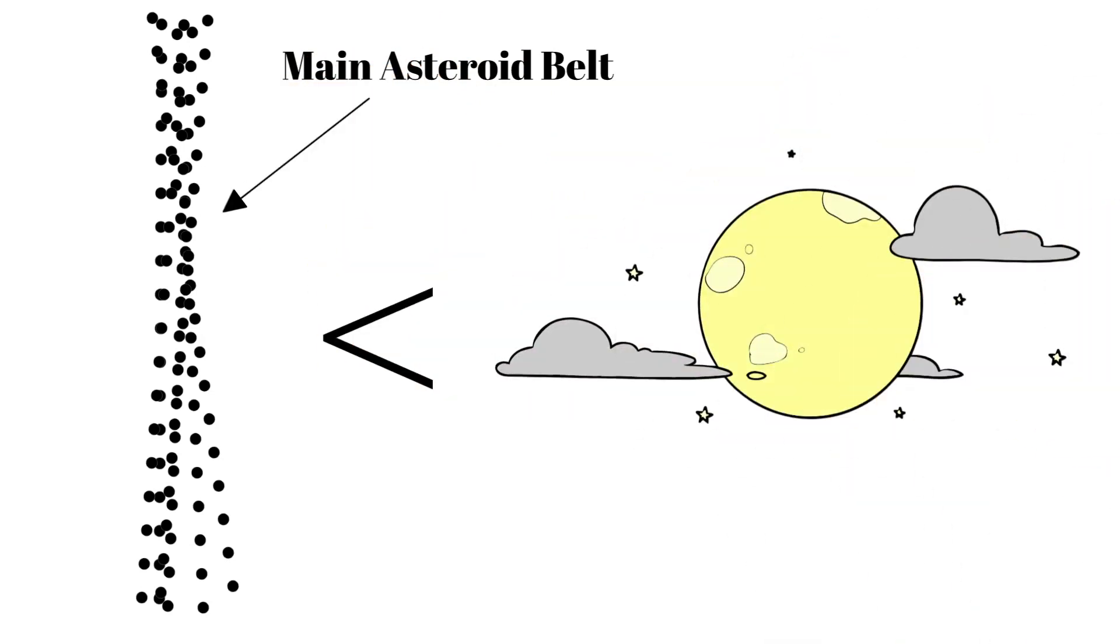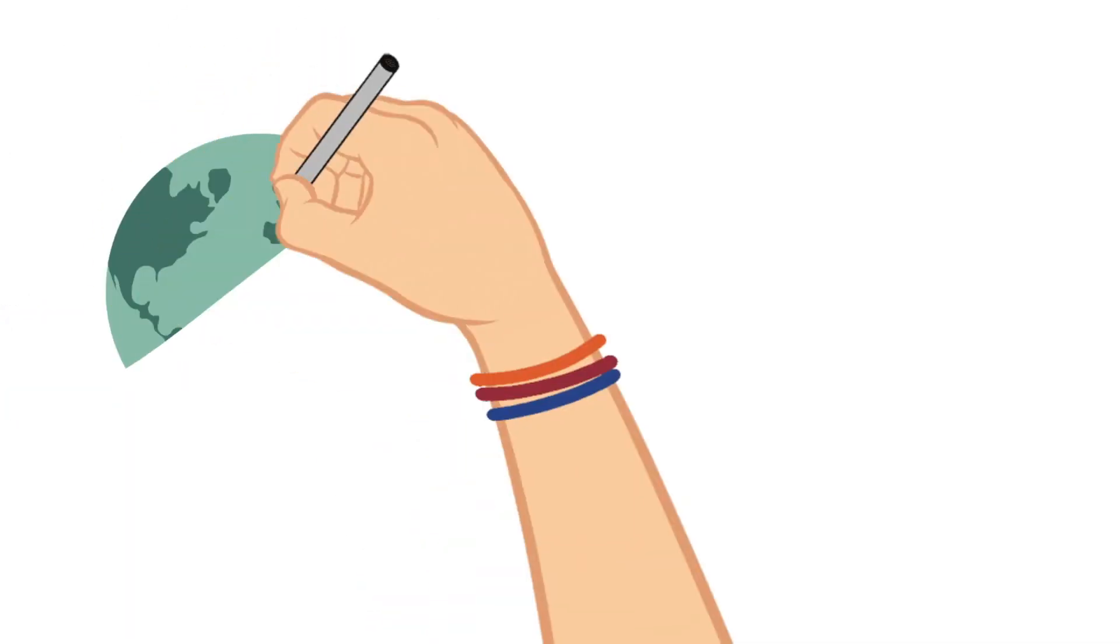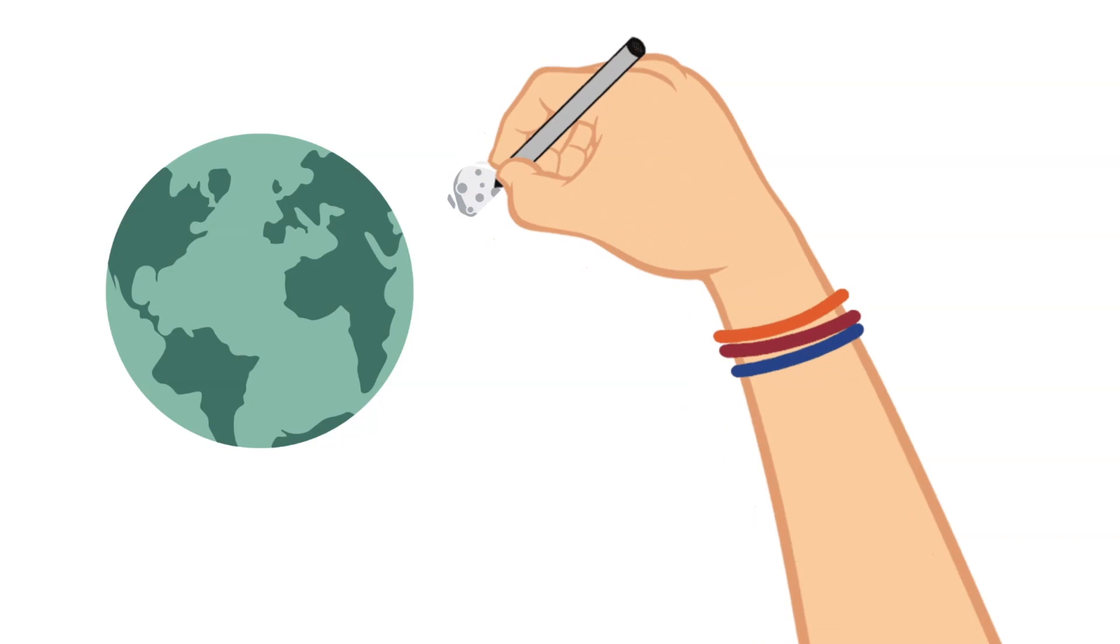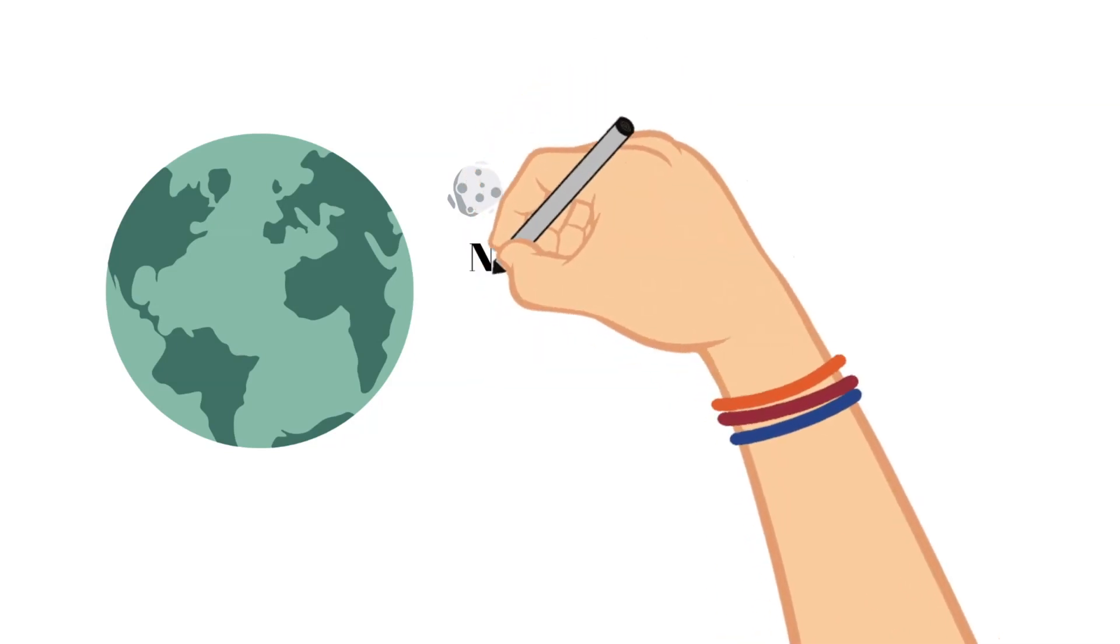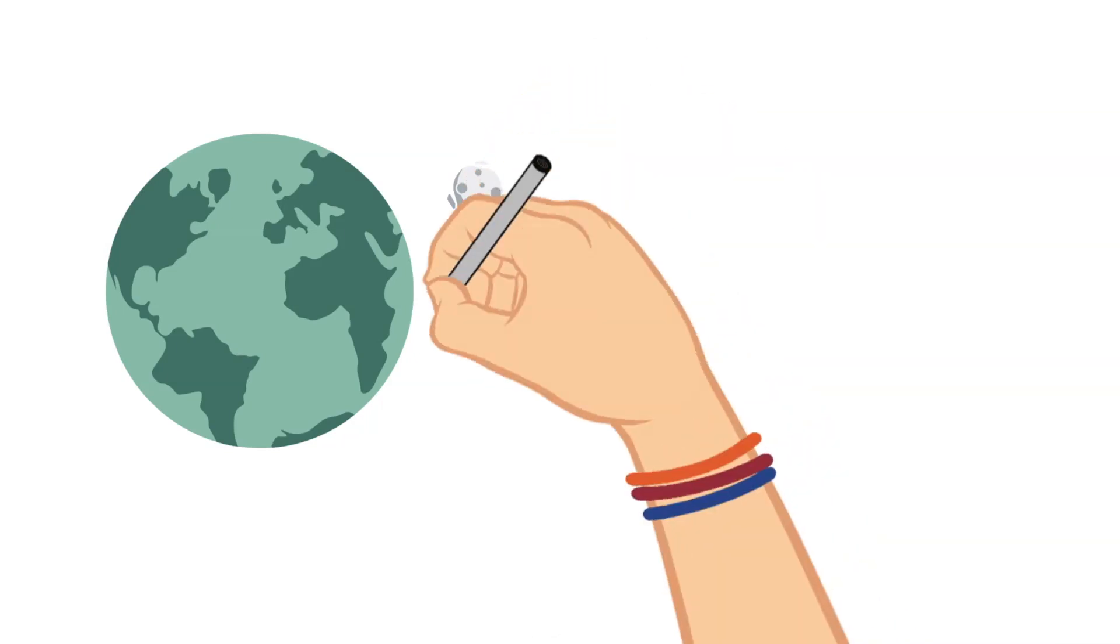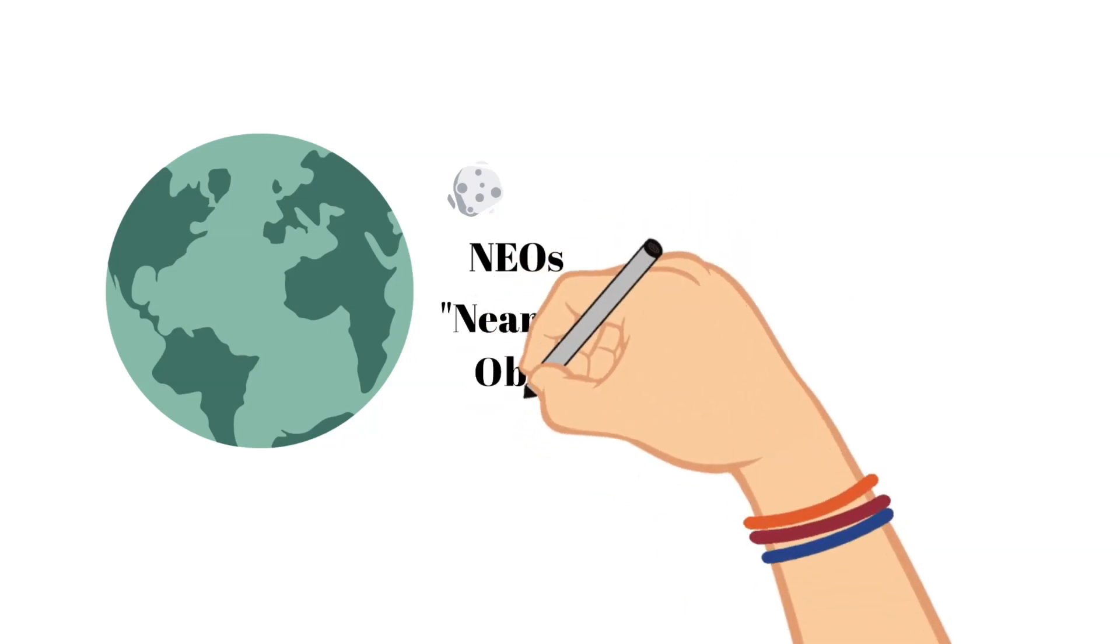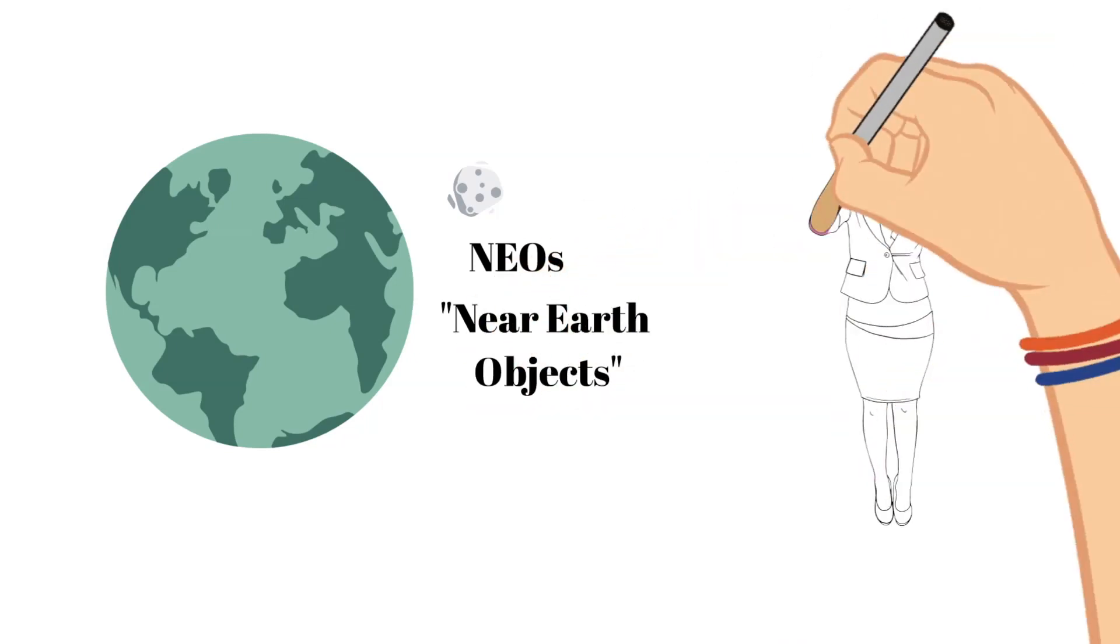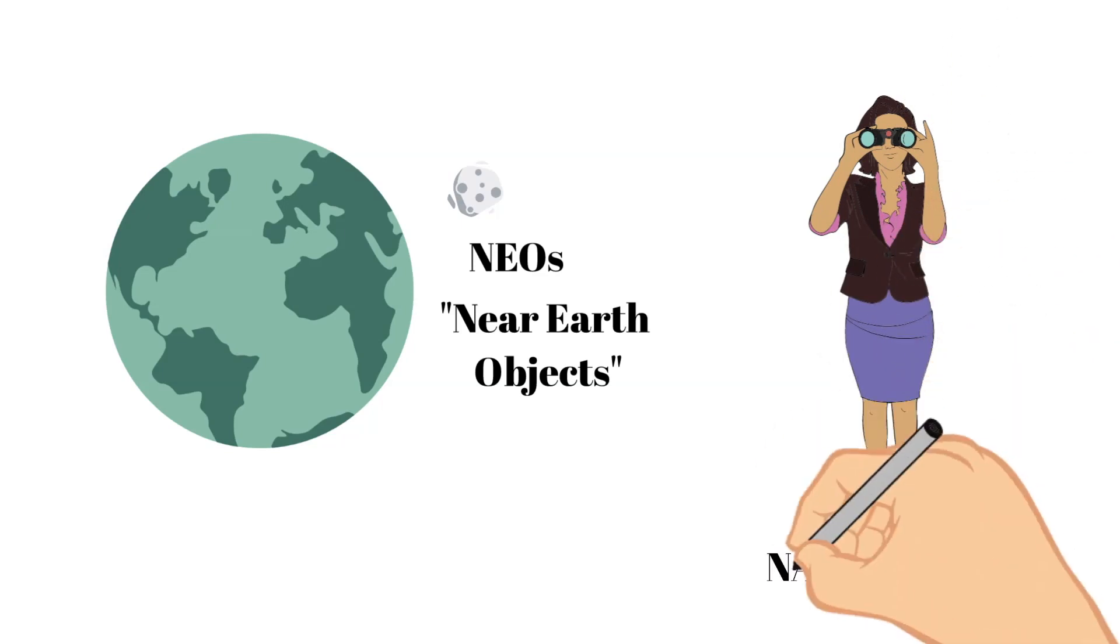Some asteroids can come close to Earth in its orbit around the sun, and these are called NEOs or near Earth objects. NASA scientists are sure to keep a close eye on them.